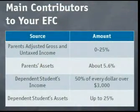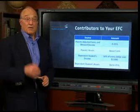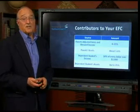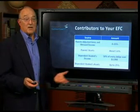Then they take a look at your dependent student's income, and they'll let the student earn about $3,000. But once you get above that threshold, the formula will go after every single dollar at the rate of 50 cents on the dollar. So if your student earns about $10,000, you can pretty well bank on the fact that that's going to raise the family contribution by roughly $3,000.